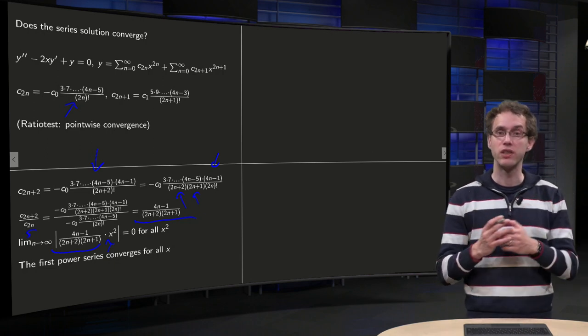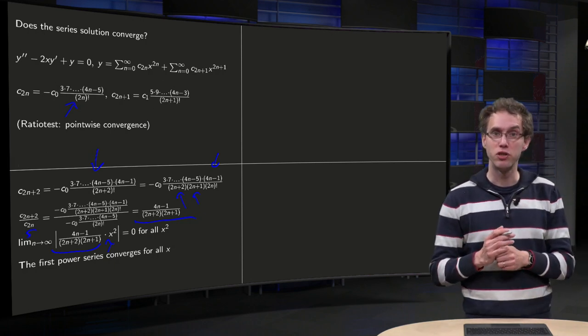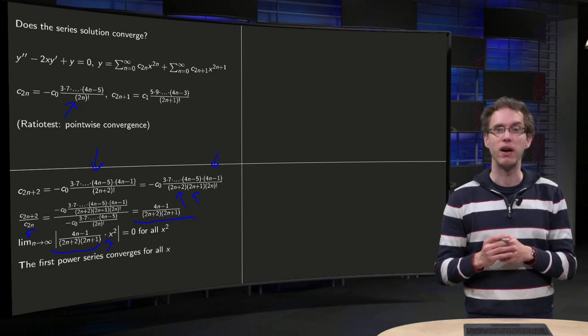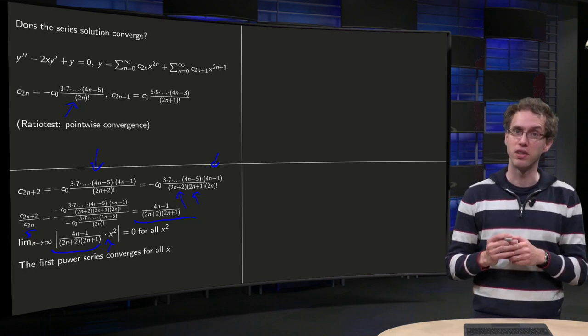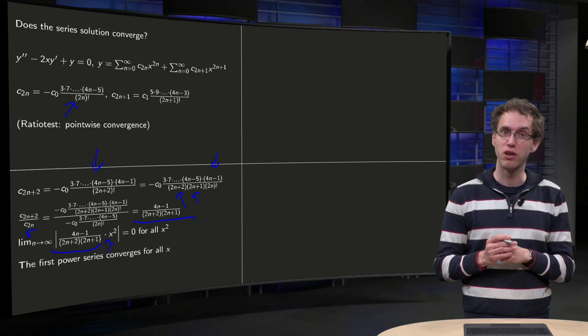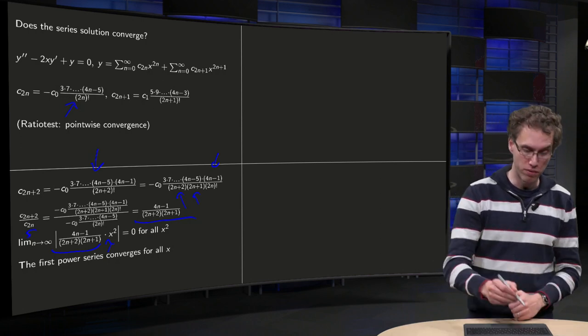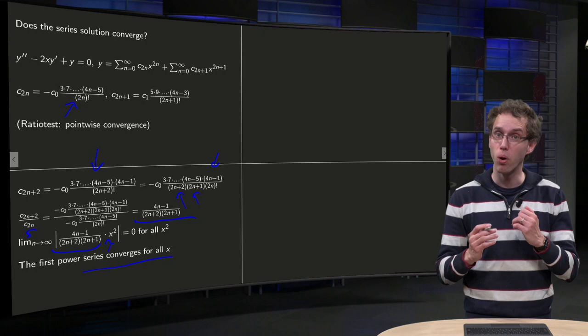Now for all x fixed, this limit equals 0. You can for example divide by n squared in the numerator and denominator, so you see this limit equals 0 if n goes to infinity, which means that the first power series converges for all x.